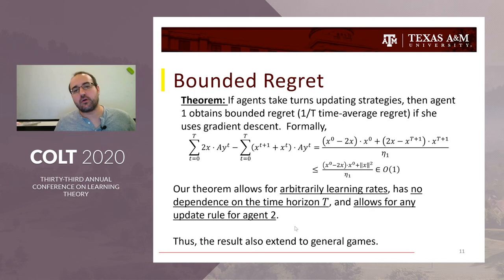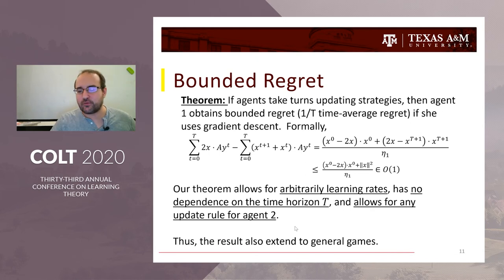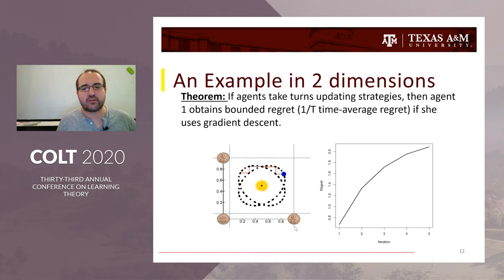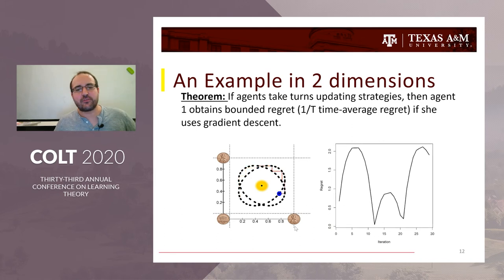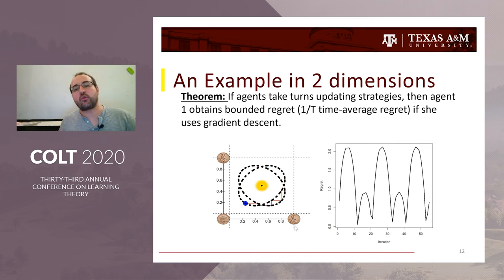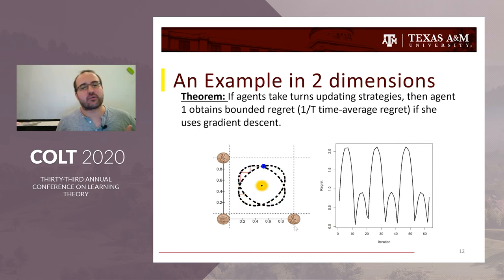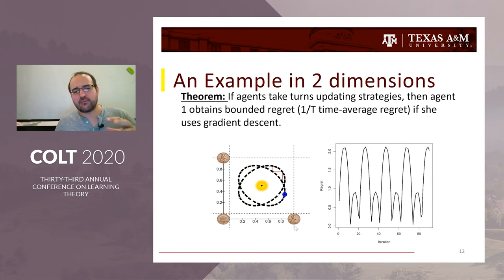Moreover, this proof makes no statements on how your opponent updates and makes no statements on the opponent's payoff matrix. Therefore, the result extends to those general linear games, including coordination games. Specifically, in a two-dimensional zero-sum game where both agents use gradient descent, the total regret actually oscillates — it doesn't grow, just oscillates — giving us 1 over t time average regret in a fairly regular way.